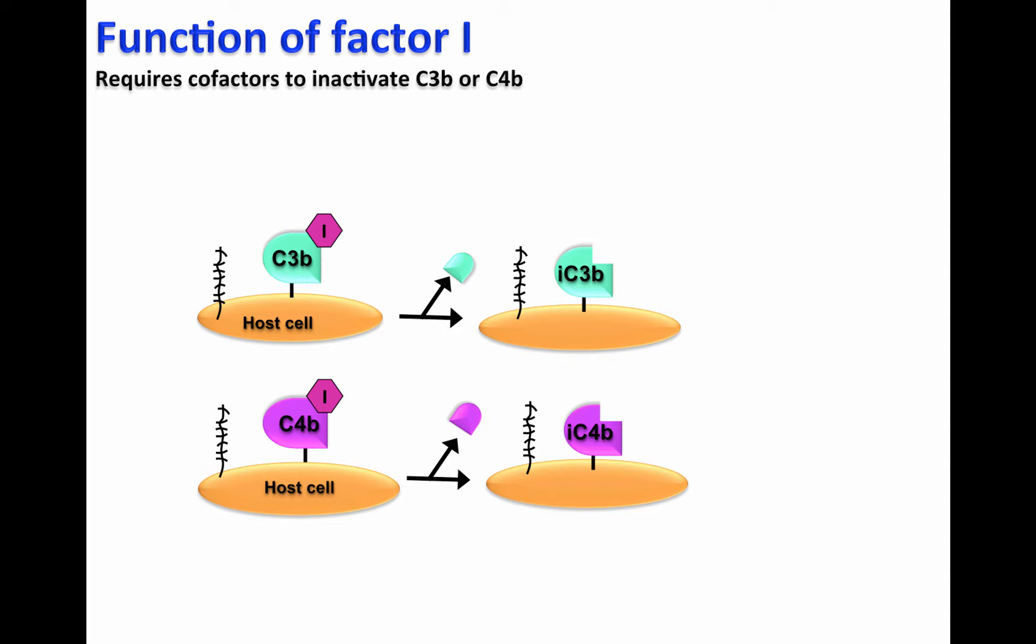Factor I requires cofactors in order to inactivate C3b or C4b. Examples of these cofactors are CR1, also called CD35, MCP or CD46, soluble complement regulatory proteins that bind to C3b, Factor H, and C4 binding protein that binds to C4b.